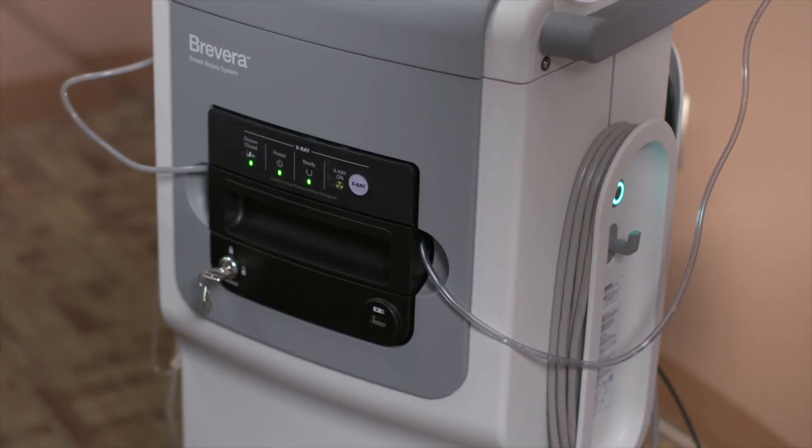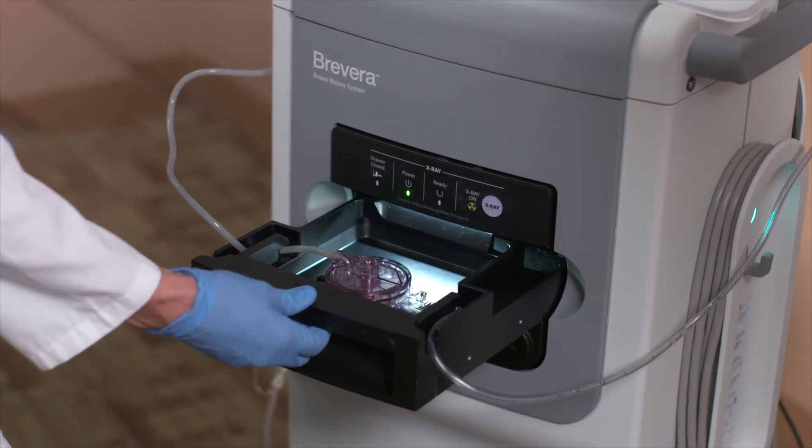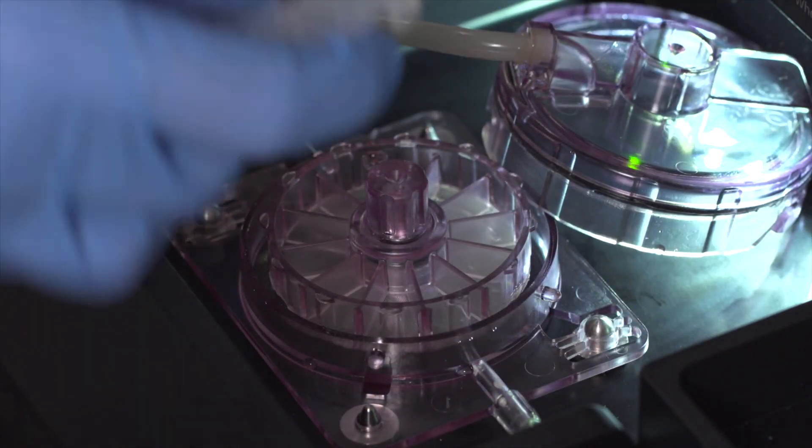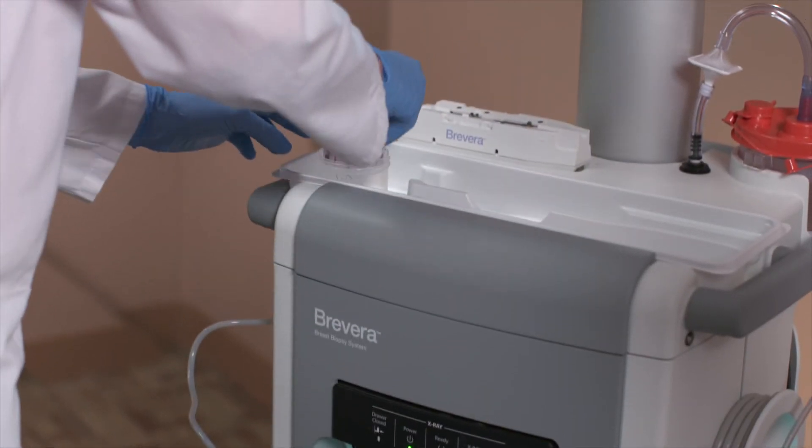To prep the specimens, the technologist will open the drawer, twist off the tissue filter assembly cover, place the tissue filter cap over the filter, remove the filter, and place in formalin jar.